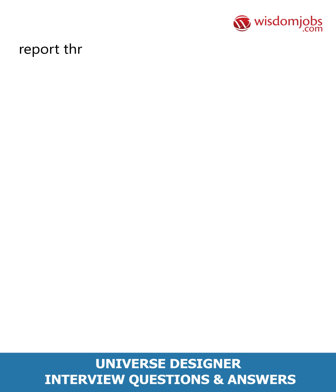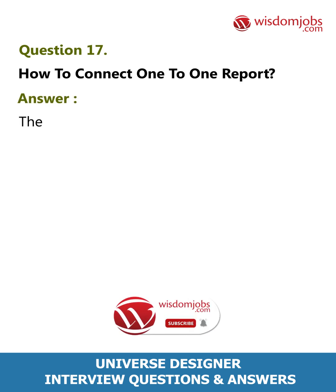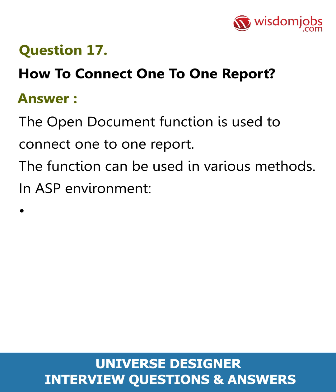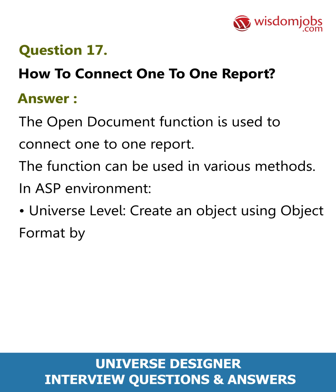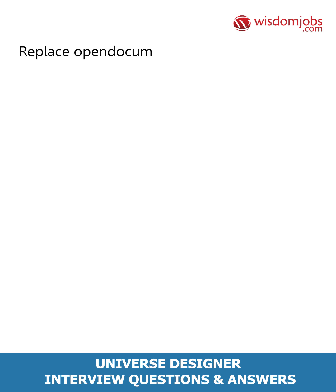Question 17: How to connect one-to-one reports? Answer: The Open Document function is used to connect one-to-one reports. This function can be used in various methods. In an ASP environment, use the universe level to create an object using object format by enabling the HTML option. At the report level, use the hyperlink function. In a JSP environment, replace OpenDocument.asp with OpenDocument.jsp.